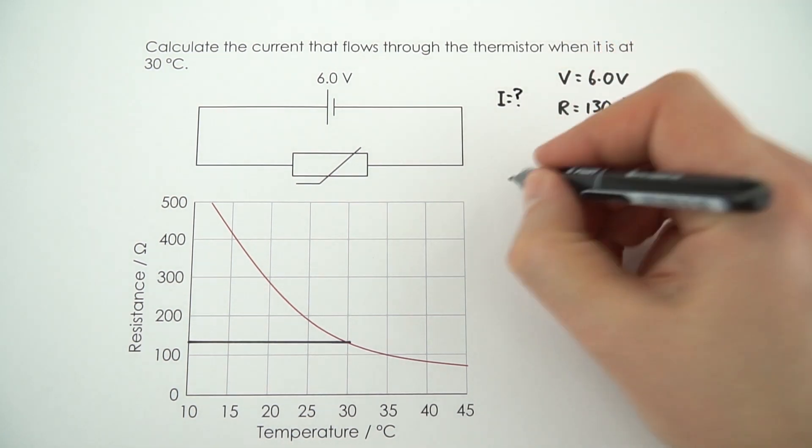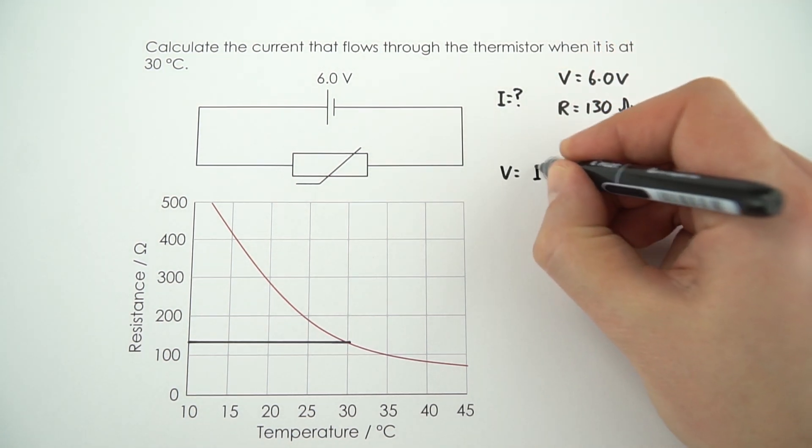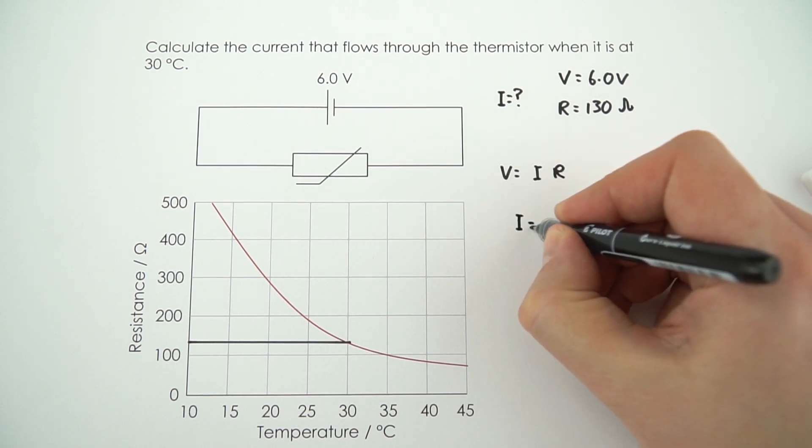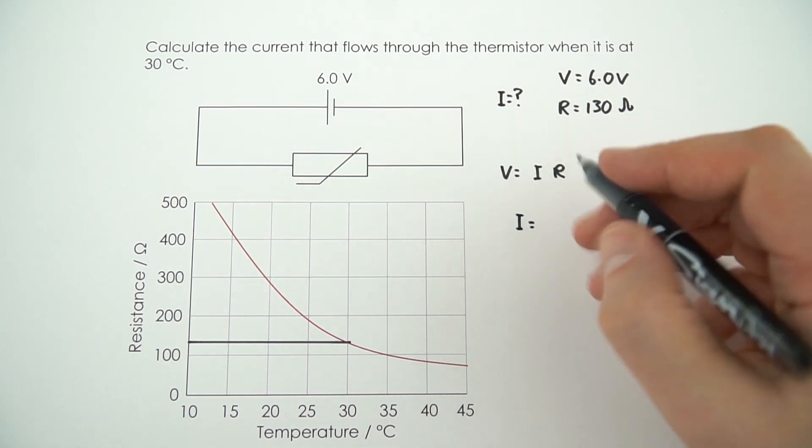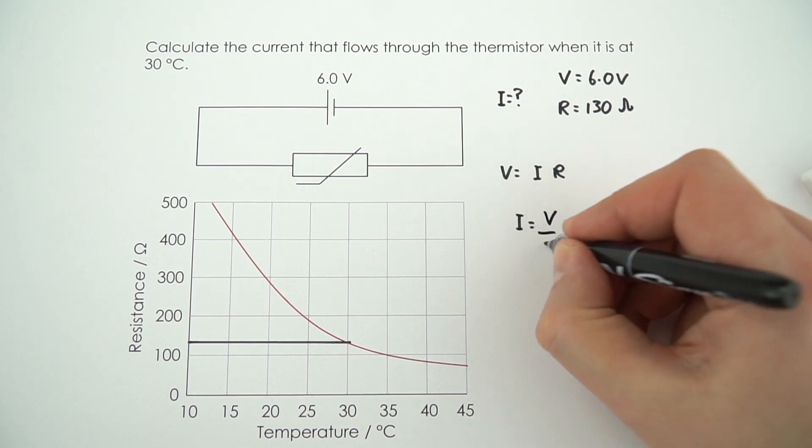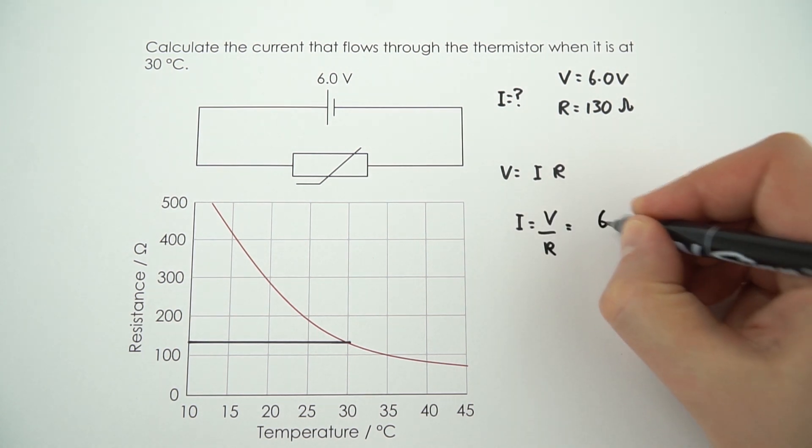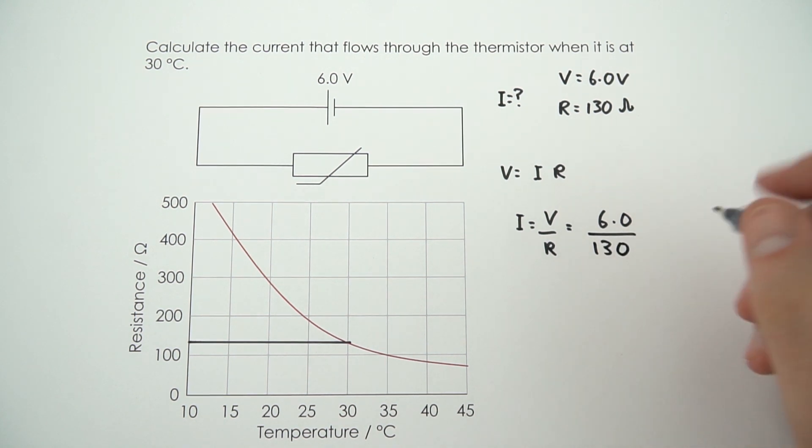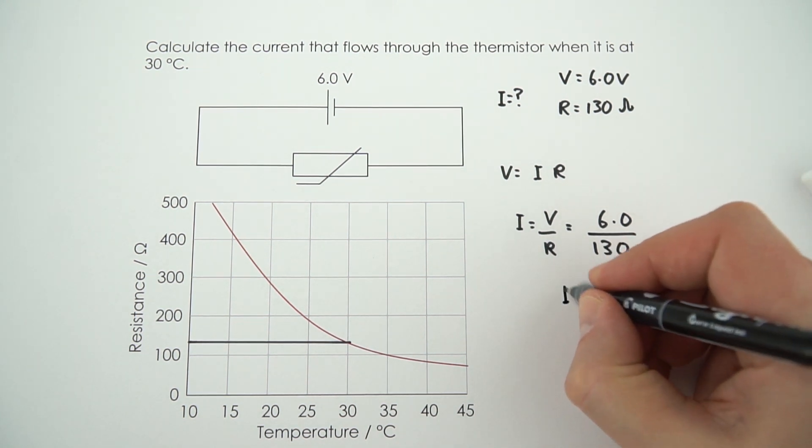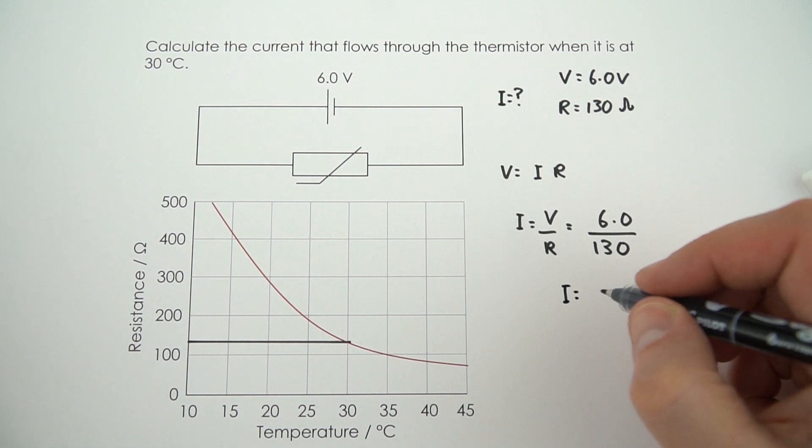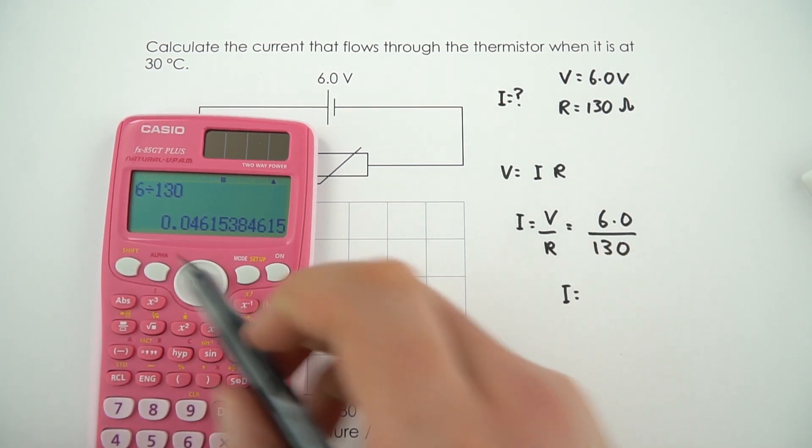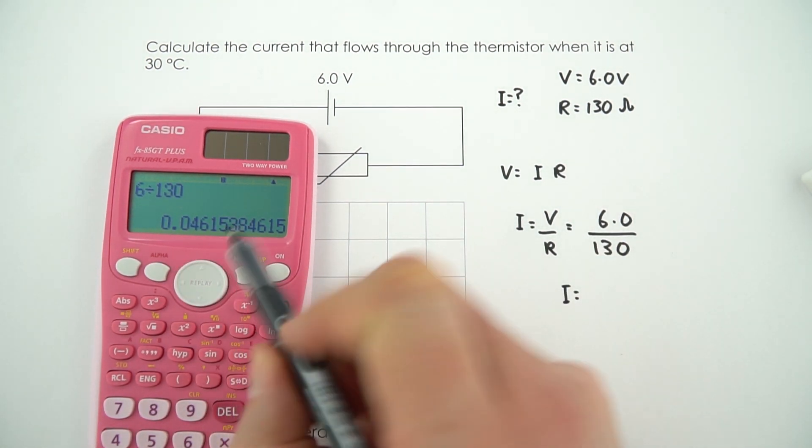We don't know the current, but we do know that V is equal to I multiplied by R. So I can rearrange this to make I the subject by dividing both sides by R to say that I is equal to V over R, which in this case is 6.0 divided by 130. Then if I use my calculator to put these numbers in, 6 divided by 130, that's equal to 0.04615.